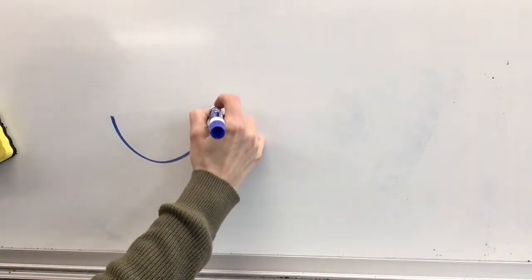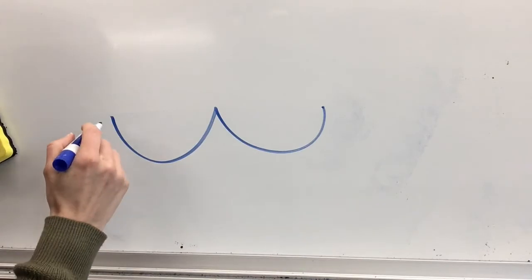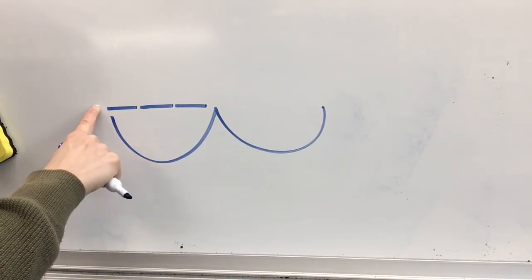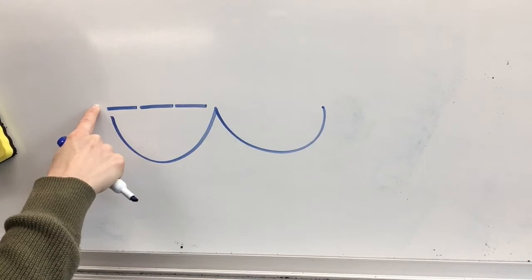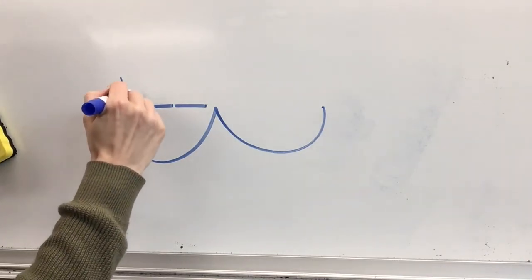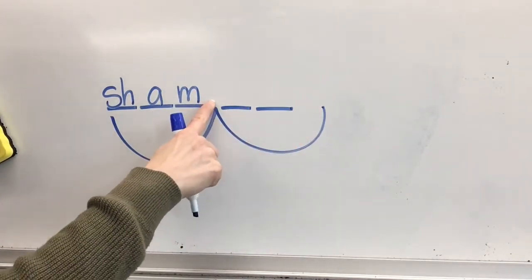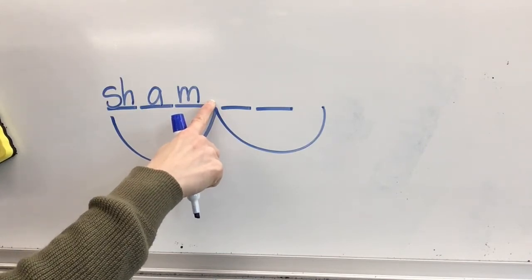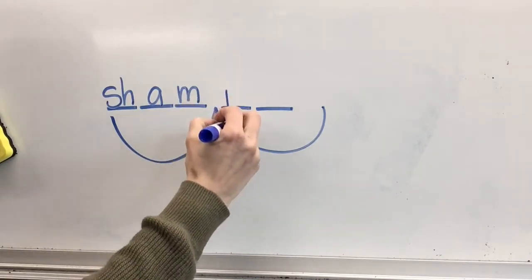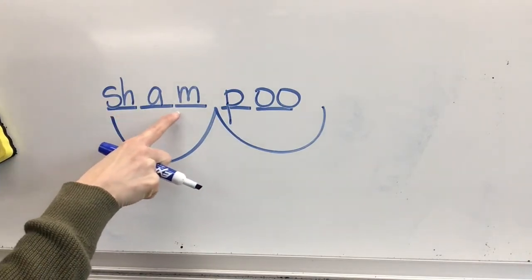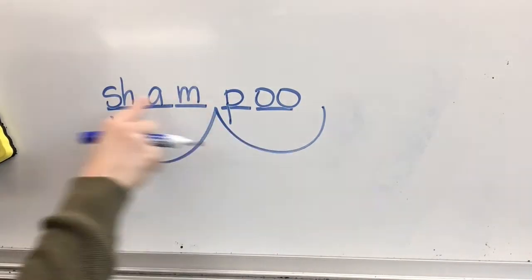All right, time for challenge words. Your first word is shampoo. What word? Shampoo. Two parts. Stretch the sounds you hear in sham: sh-a-m. Write your sound spellings for sham. Stretch the sounds you hear in poo: p-oo. Write your sound spellings for poo. Check your word. Spell shampoo: S-H-A-M-P-O-O. Word: shampoo. Yes, shampoo.